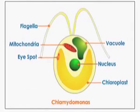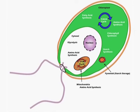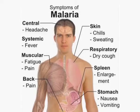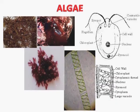Chlamydomonas has flagella and can also move about with their help, similar to Euglena. The nutrition in protoctistans is diversified, as in Monerans. They can be parasitic — living inside the body of the host — for example, Trypanosoma and Leishmania, which can cause diseases.